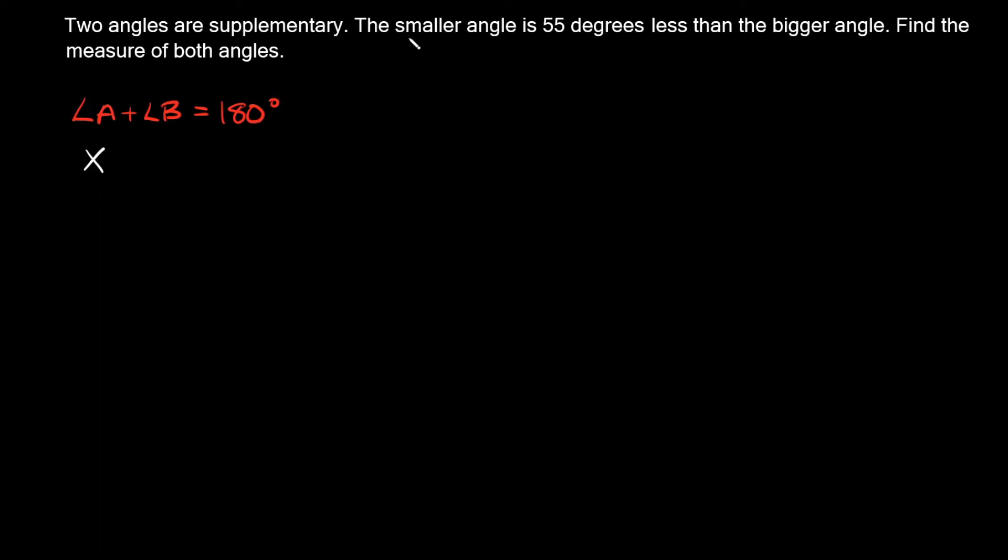So here it says the smaller angle is 55 degrees less than the bigger angle. Okay, so angle A, let's just say it's the bigger angle because we don't have any information about it. But here it says the smaller angle is 55 degrees less than the bigger one. So this is saying angle B, or the smaller angle, is the same as X but it's 55 degrees smaller than X.